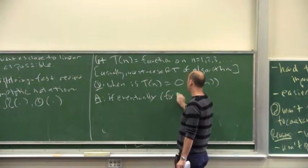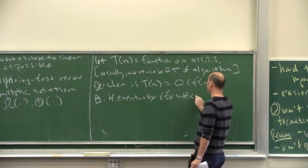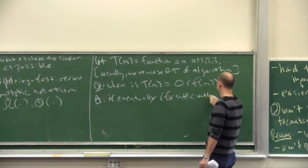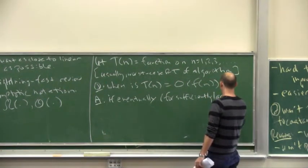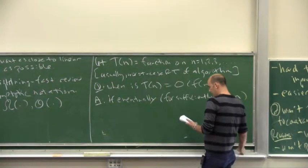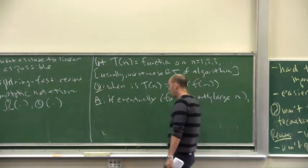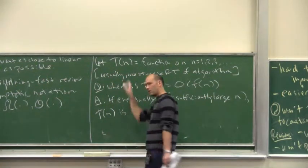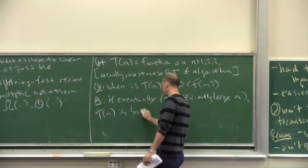So what it means in English for T(n) to be Big O of F(n) is it means that eventually - and by eventually, I mean for sufficiently large values of n - so remember, we're thinking about big problems - for sufficiently large n, what should be true is that T(n) is bounded above by a constant multiple of F(n).